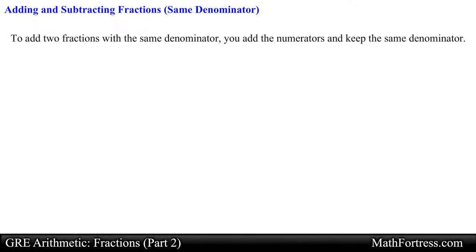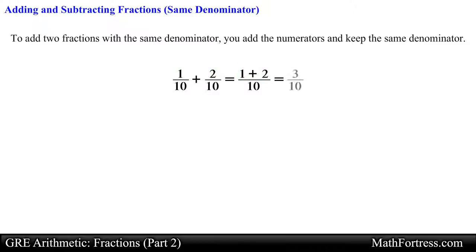To add two fractions with the same denominator you add the numerators and keep the same denominator. For example, one tenth plus two tenths is going to be equal to the sum of the numerators over ten. Simplifying the numerator results in the final answer equal to three tenths.